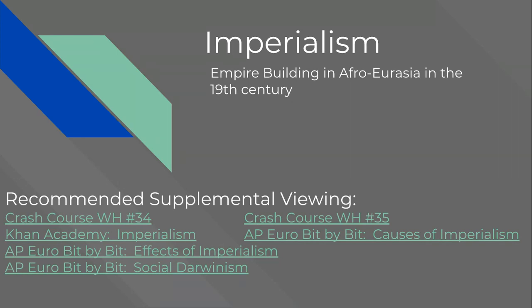In the recommended supplemental viewing, Crash Course number 34 deals directly with imperialism, and number 35 deals more with nationalistic motivations for imperialism by focusing on Japan and Japan's response to imperialism. The Khan Academy video is pretty helpful because it ties imperialism more into the process of industrialization and how those two things drove one another — how industrialization created demands for markets, raw materials, and fuel, and how imperialism provided those. At the same time, imperialism was made possible because of the mechanization of warfare that industrialization provided.